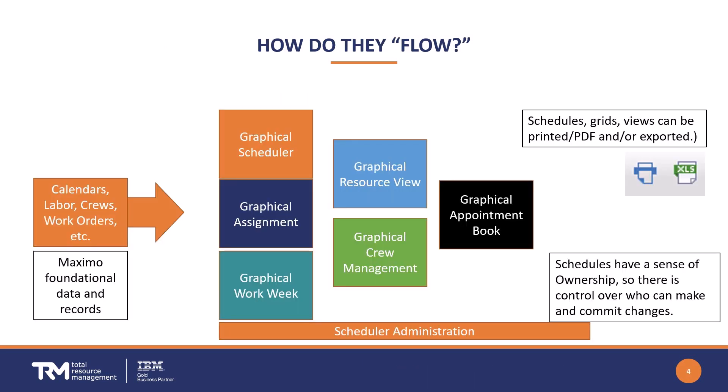So how do all these applications fit together? When you look at them in the menu in the product, they're not in any particular order. Take a look at this diagram — it will give you a sense of where you would start and how you would evolve your usage of these different apps. On the left-hand side, as we've mentioned and will continue to mention, the record quality of your calendars, labor records, work orders, and things like that need to be in pretty good shape in order to pull them into the different graphical applications. Once you're in good shape there, it's a matter of using initially the graphical scheduler, which would probably be the very first application and the one you'll use the most.